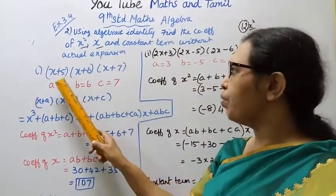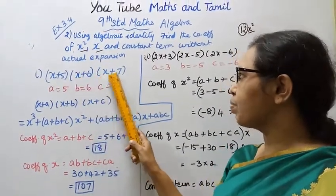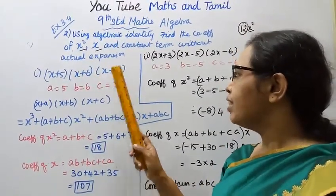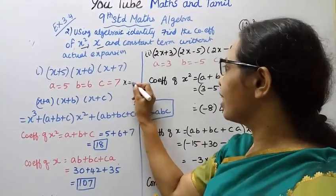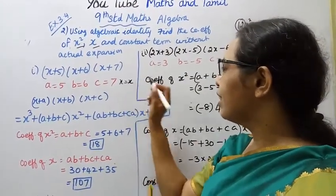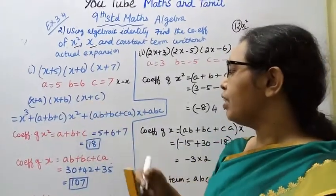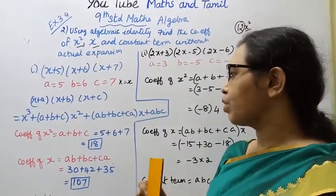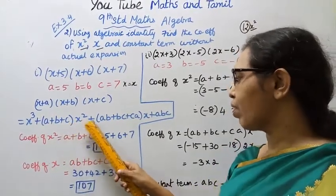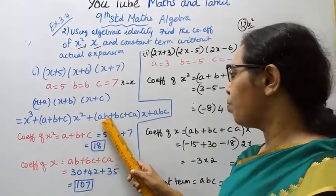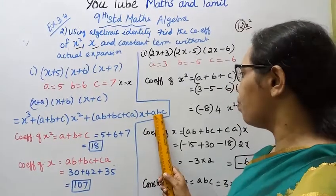The first problem is (x+5)(x+6)(x+7). The algebraic identity for (x+a)(x+b)(x+c) expands to x cubed plus (a+b+c) x squared plus (ab+bc+ca) x plus abc.